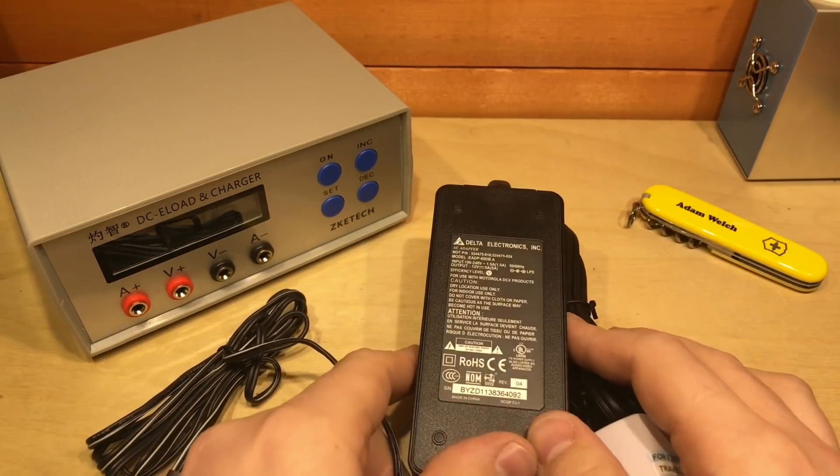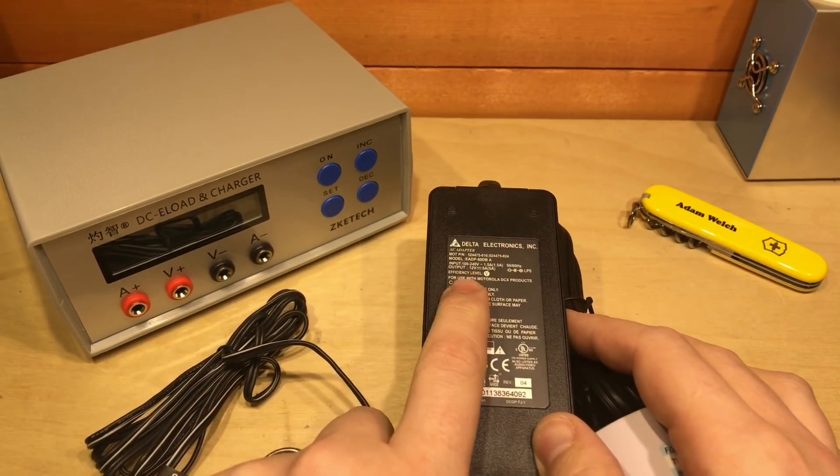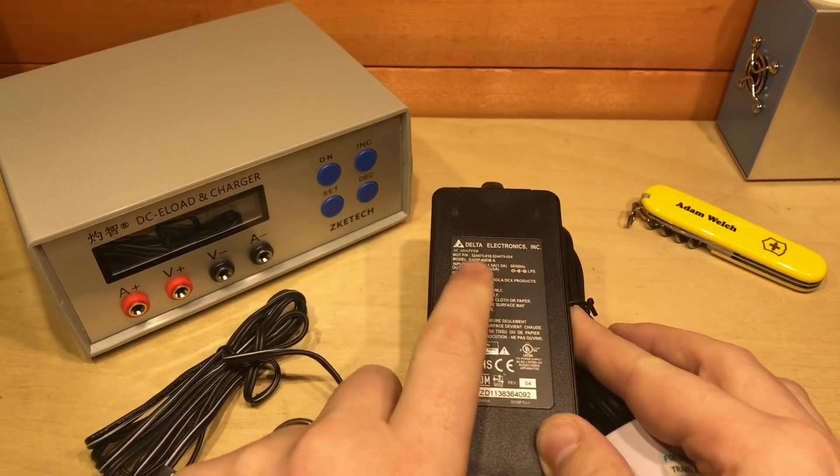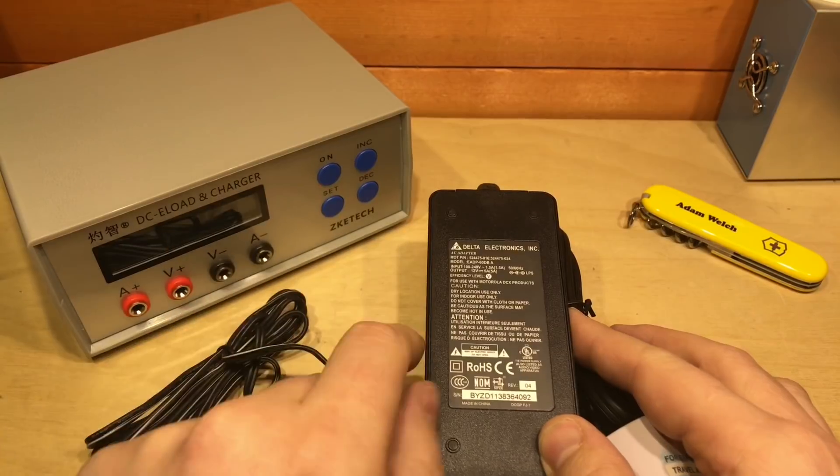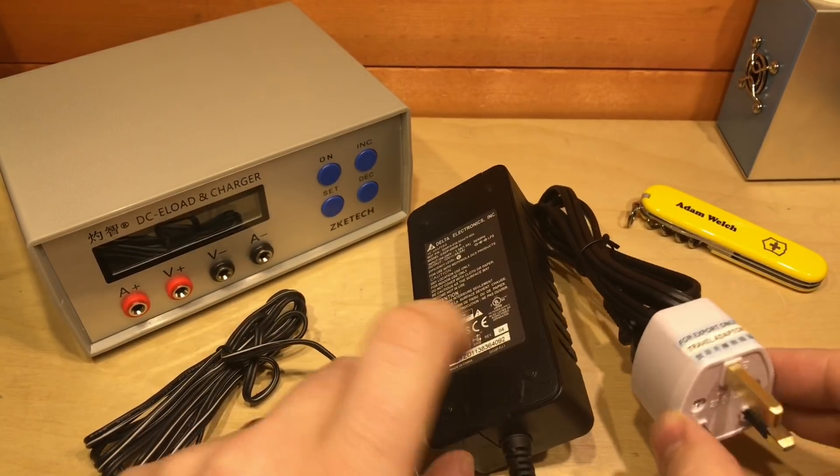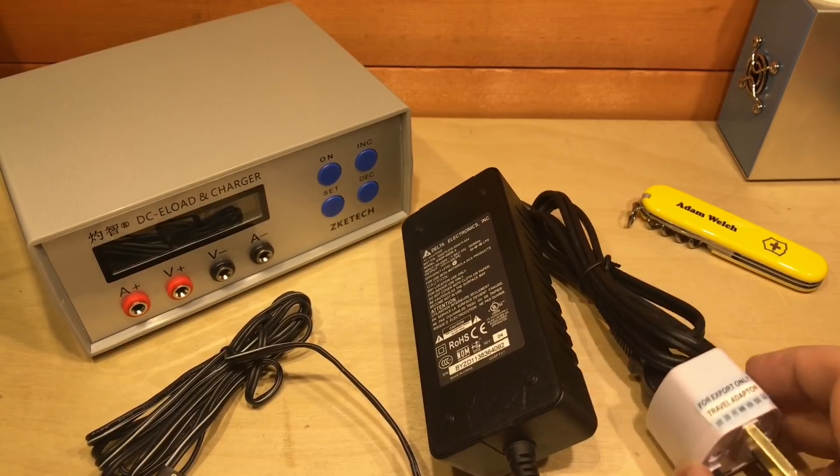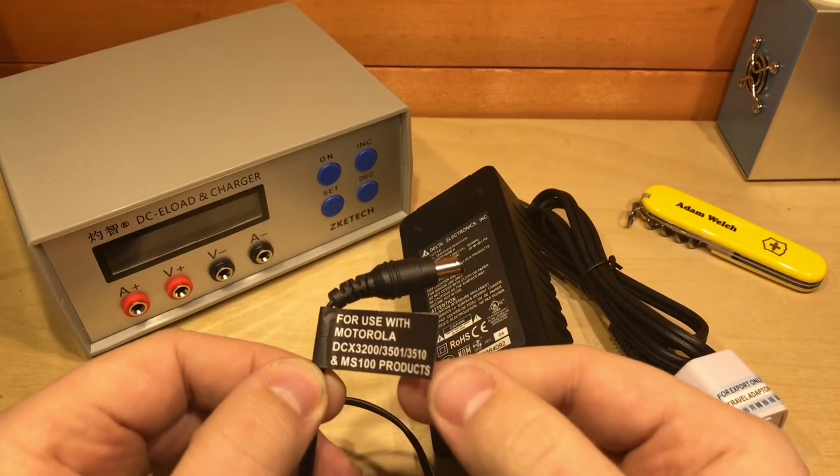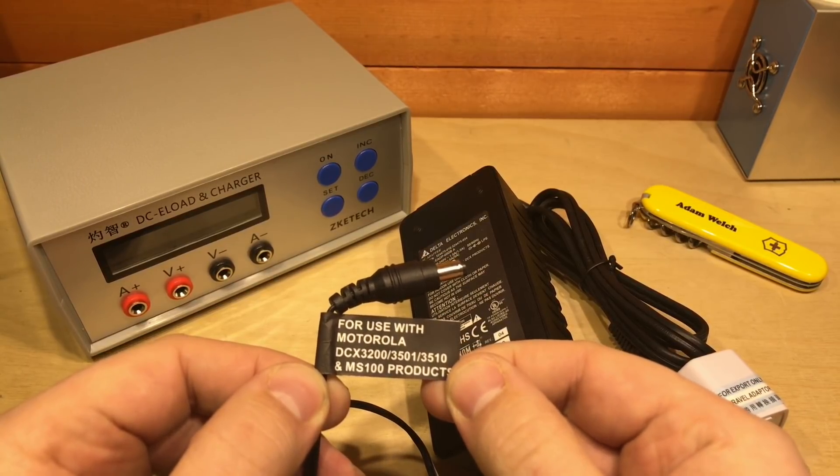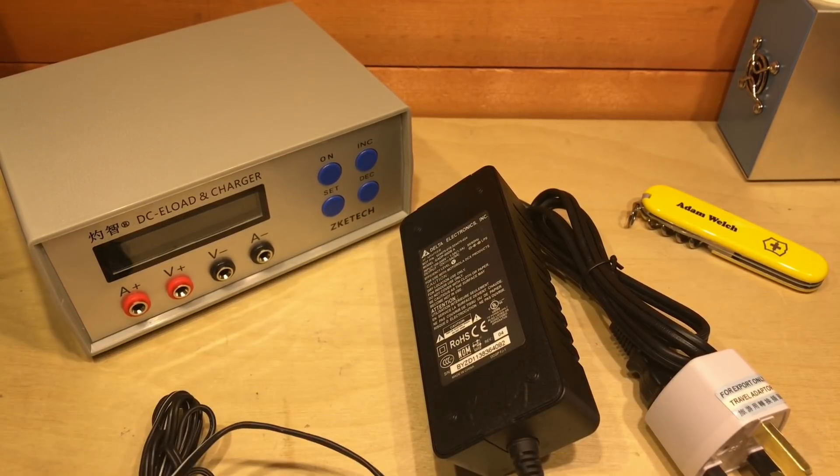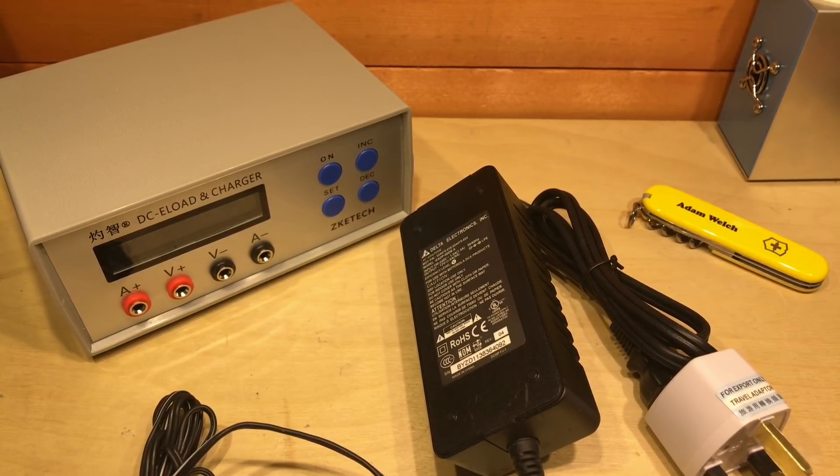So it also came with a mains power supply which is 12 volts and 5 amps. Well that's pretty good, being 12 volts, that means I should be able to plug this straight into the battery bank here in the shed. It came with an American plug and a death adapter sadly. But on the other end, the barrel jack does say for use with the Motorola DCX3200, whatever that is. So they've obviously found this power supply from an old product or reclaimed it from somewhere.